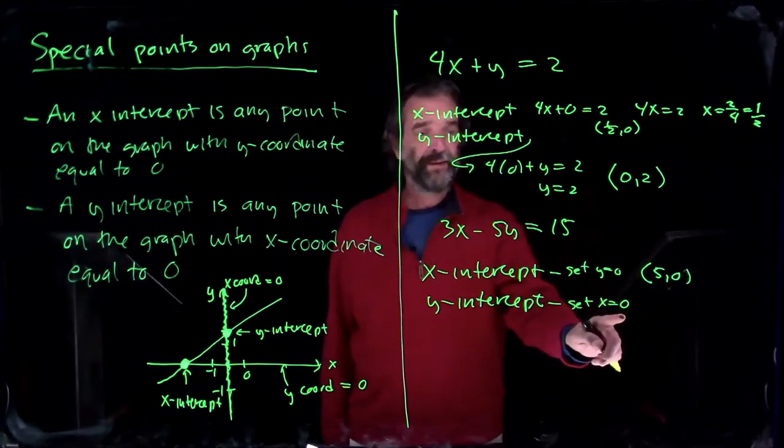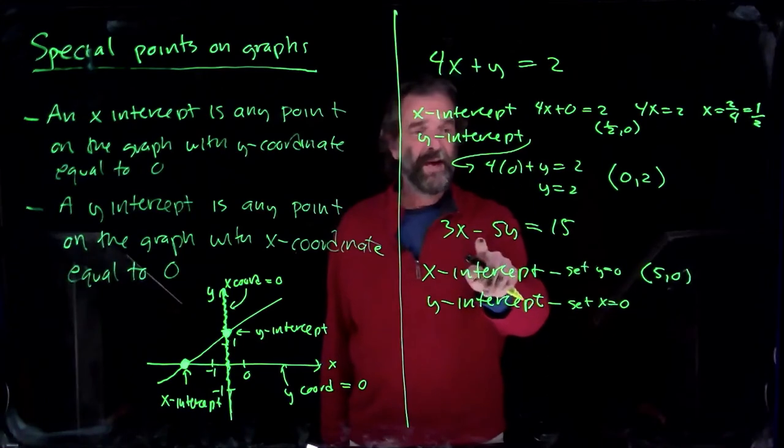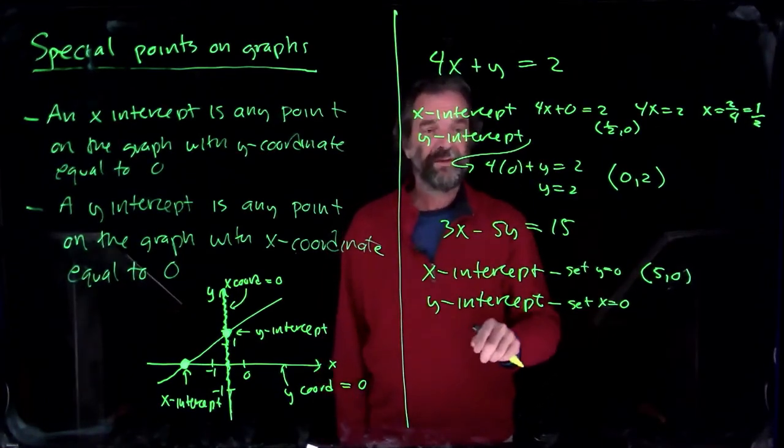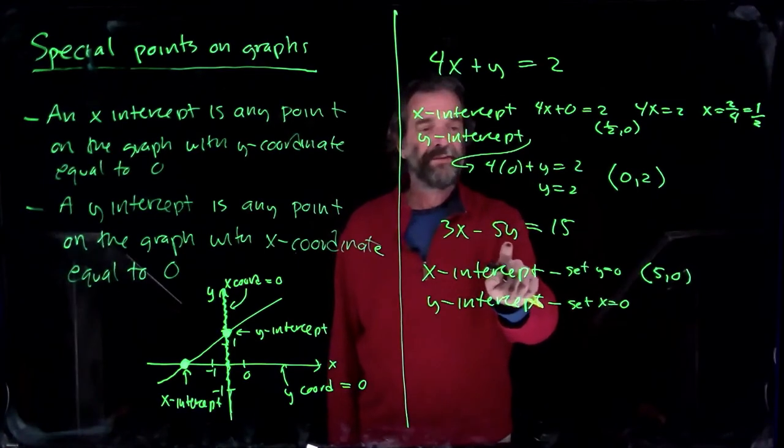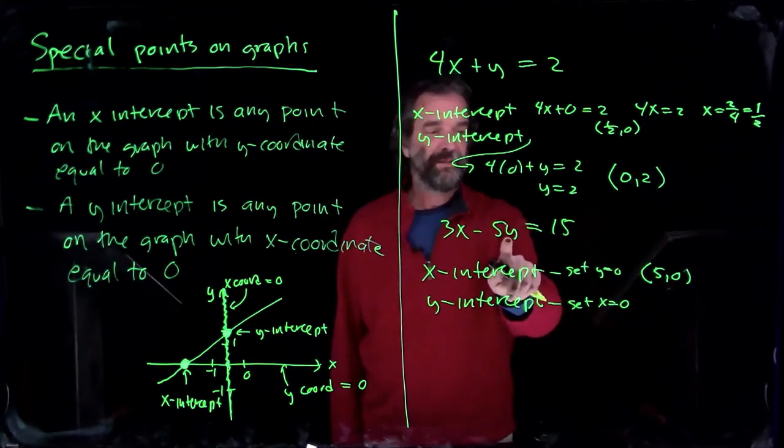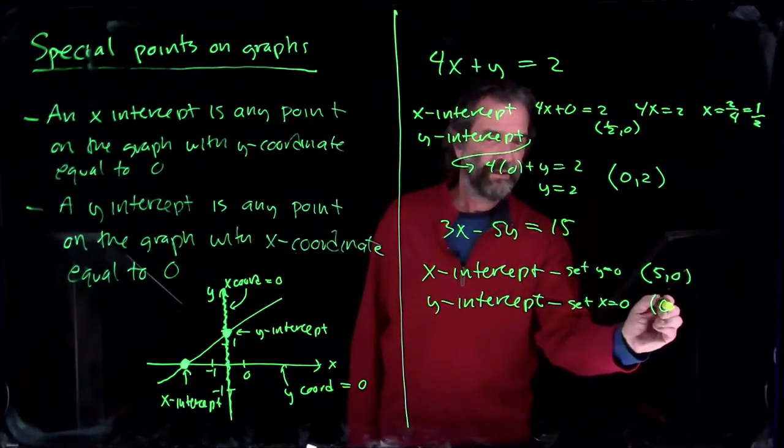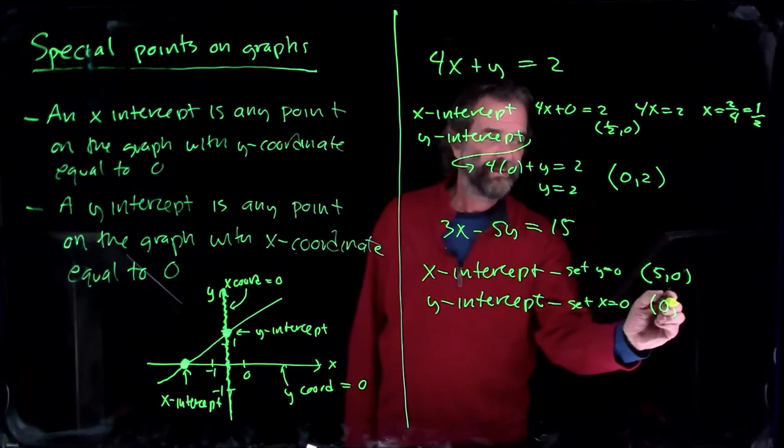We set x equal to 0 to find the y-intercept. We get minus 5y. 3 times 0. Minus 5y is 15. 3 times 5 is 15. But minus 5. We have to multiply by minus 3 to get positive 15. So we set x is 0 and y was minus 3.